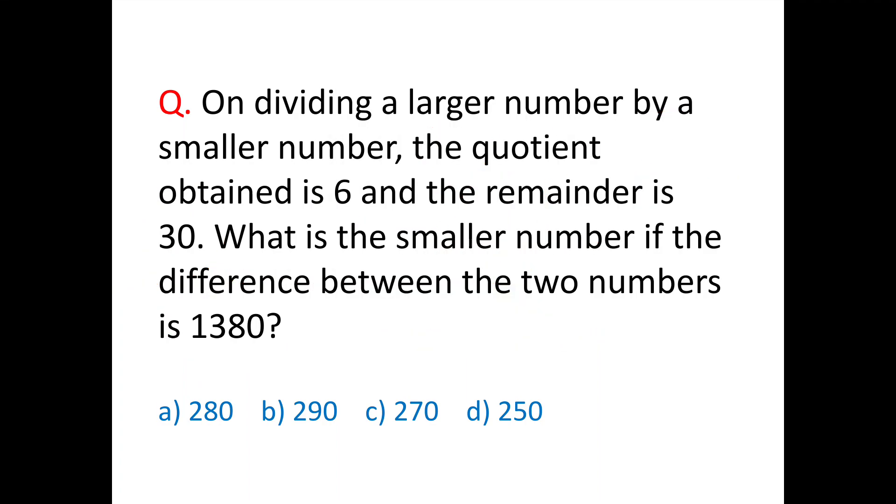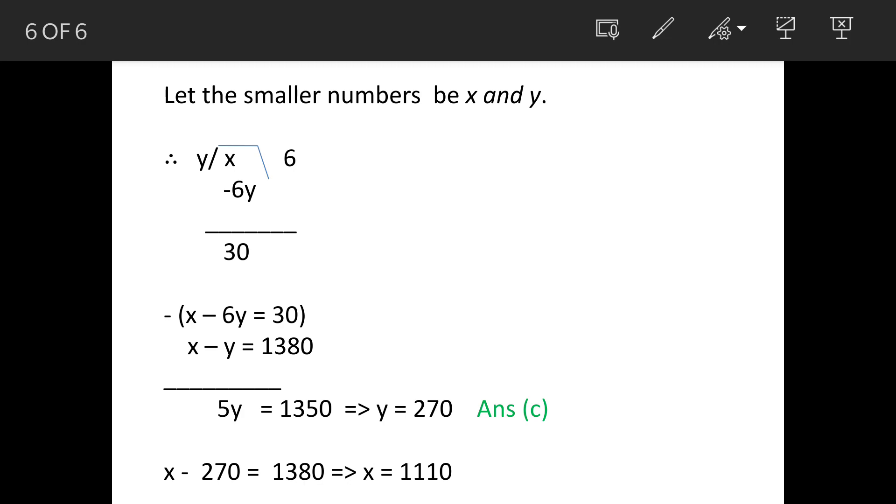Assume that the numbers are x and y. Let's divide x with y. They are saying the quotient is 6, so we'll divide it 6 times. So x, then 6y, minus 6y.